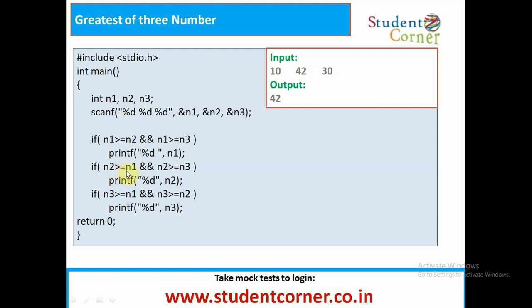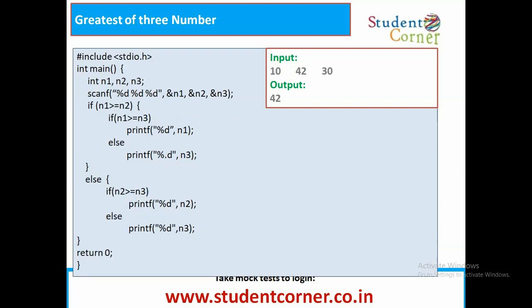Similarly, if b greater than a and b greater than c, then b is greatest. And if c greater than a and c greater than b, then obviously c is greatest. That is the way we check it. This is a single line statement. The next one is a nested if-else condition.